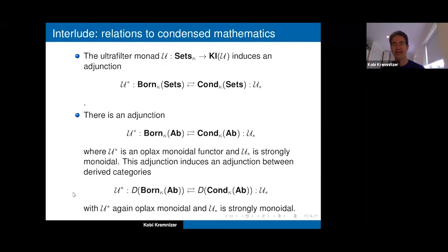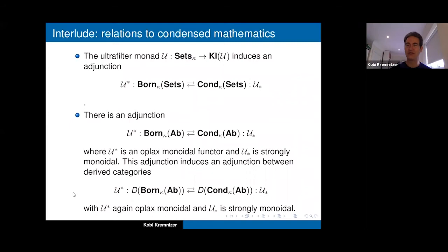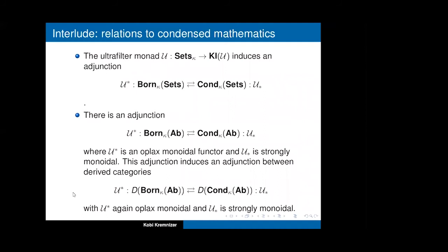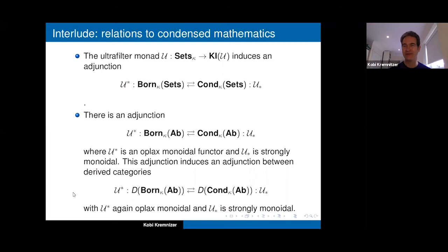Bornological sets and bornological abelian groups are very simple, constructive objects starting just from the category of sets. Their projective generators are L¹ spaces. In contrast, the condensed world requires ultrafilters and Stone-Čech compactifications, which are highly non-constructive — we need the axiom of choice, and questions about measurable cardinals arise. Condensed abelian groups form a complicated category. The bornological approach is simpler, though it's a matter of taste.